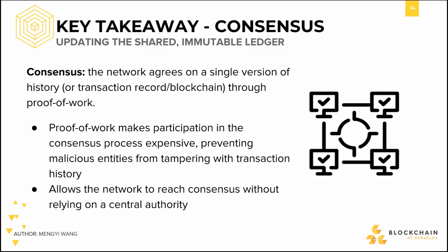The last concept we went over is consensus. Consensus is the way that the entire Bitcoin network comes to agreement about a single version of transaction history. Proof-of-work requires that voters expend a considerable amount of computational power in order to validate transactions. We need proof-of-work because there is no central authority to make sure that one person only votes once, and there is no limitation on how many identities each user can generate. Bitcoin uses computational power as a resource constraint to limit the voting power of malicious entities, so that the voting power a person has is based on how much computational power they have, instead of the number of identities they can generate.